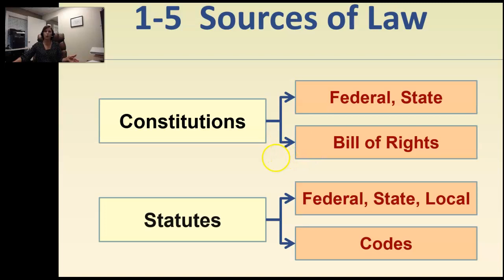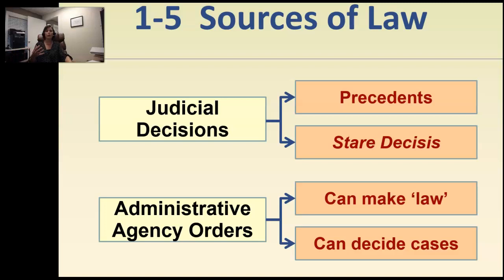Your text includes judicial decisions among the sources of law, and it's important to note that judges cannot make law. What judges are assigned to do is interpret the law — they look at your constitution and statutes and apply those to the facts of the case. But a judge cannot simply proclaim something a law; that responsibility is left to your elected officials, your congressmen or legislators.